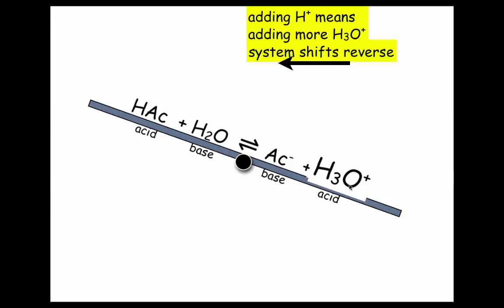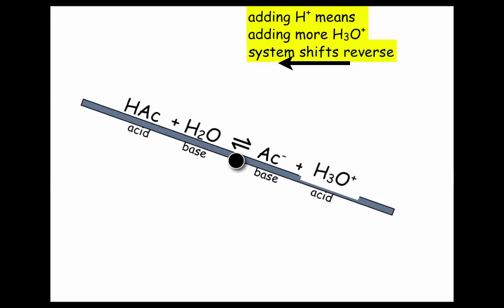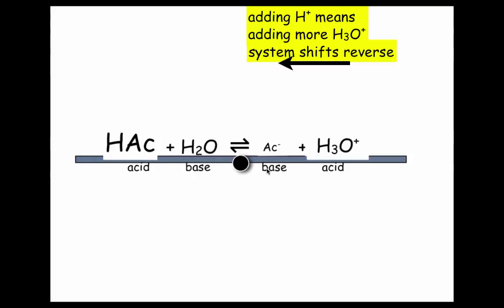Then these two are going to react, so this one's going to get a little bit smaller, and the Ac-, the base, will get a little bit smaller. But when they react, they produce more HAc acid on the other side. And then, if that increases and these decrease, ah, it levels off. It's now at equilibrium again. And if you notice, the base has gotten smaller, and the acid has gotten larger.